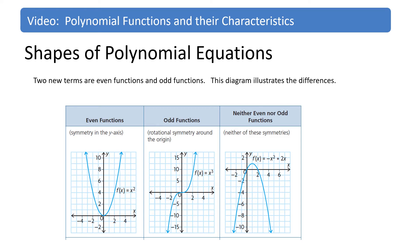What are mathematical functions? A mathematical equation is a relationship between two values. One value is represented by x — this is called the independent variable. The second value is represented by y — this is called the dependent variable.